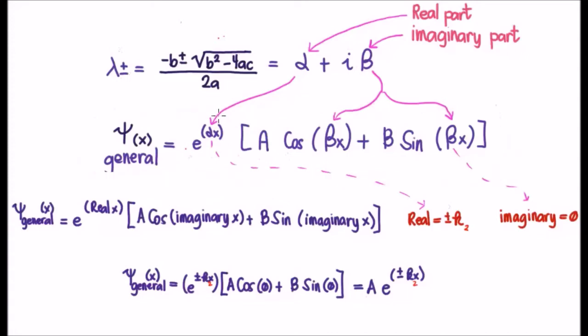And this basically says that we have a real exponential outside of a linear combination of cosines and sines, where the argument of the real exponential is αx, where α is the real part of our solution λ to the characteristic equation, and the arguments on the trigonometric functions cosine and sine is βx, where β is the imaginary part of λ, which is the solution to the characteristic equation.